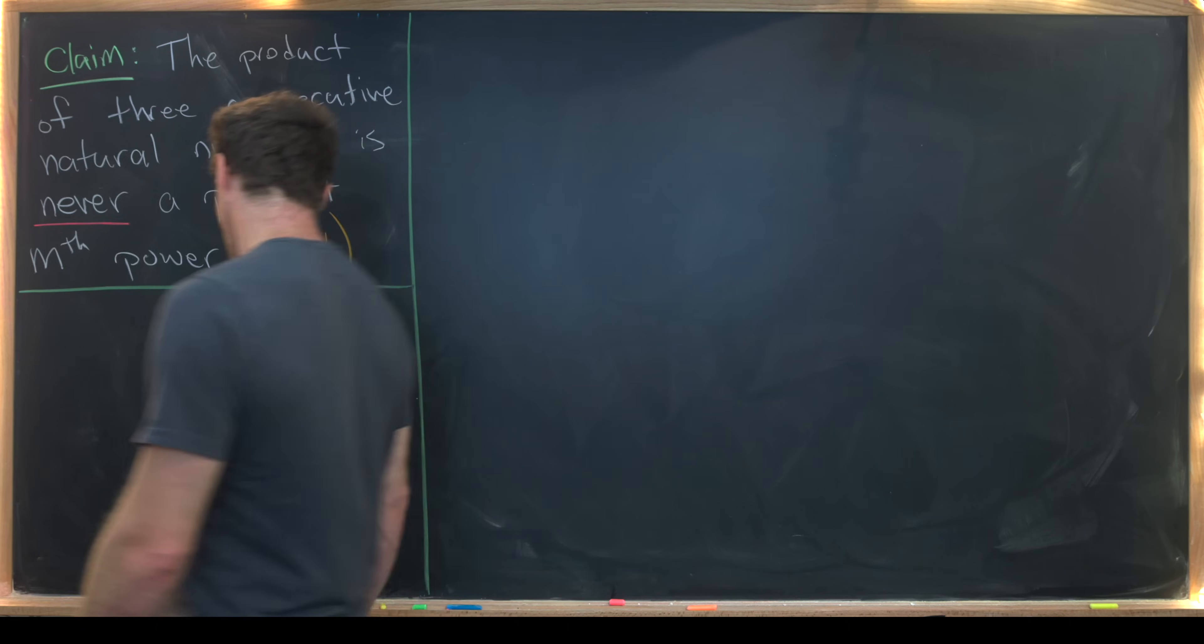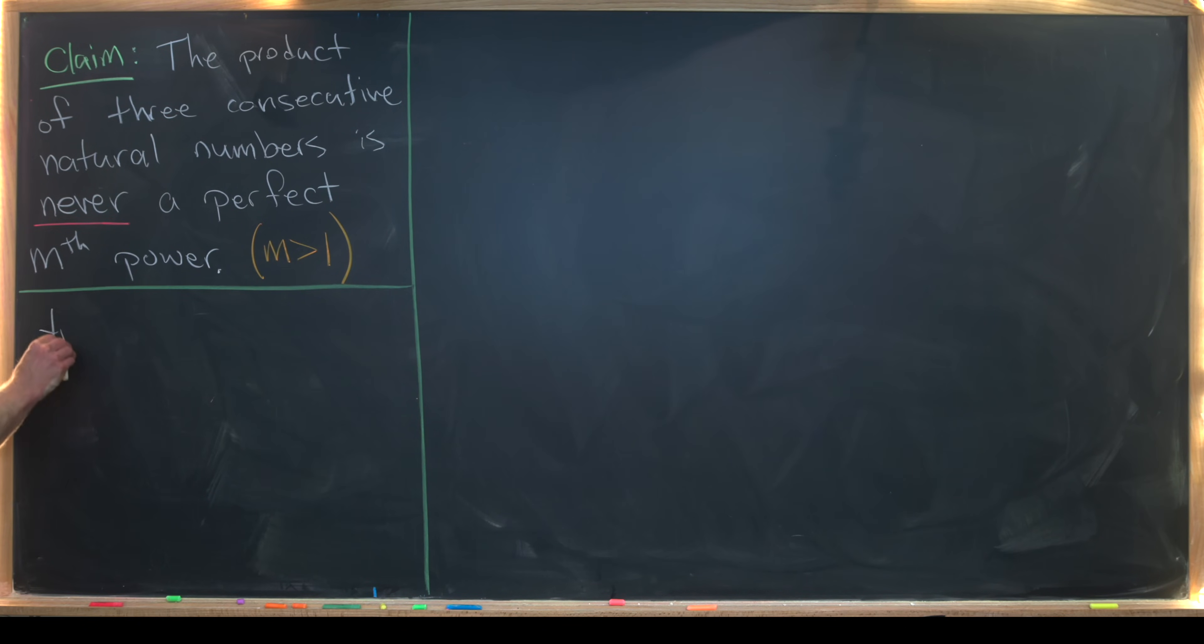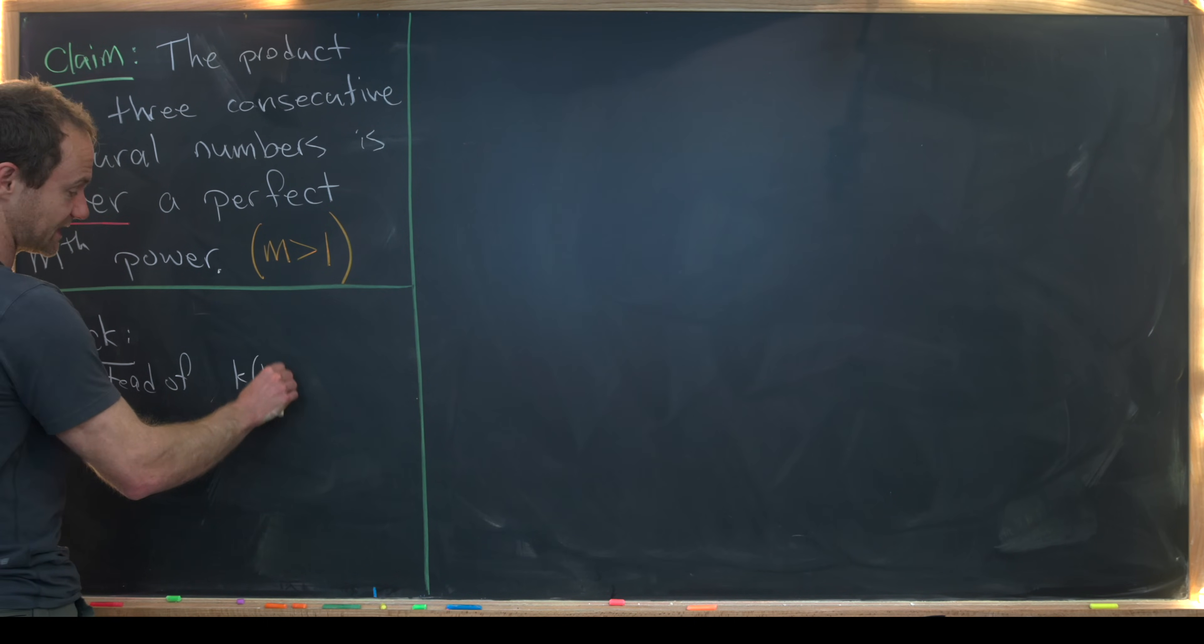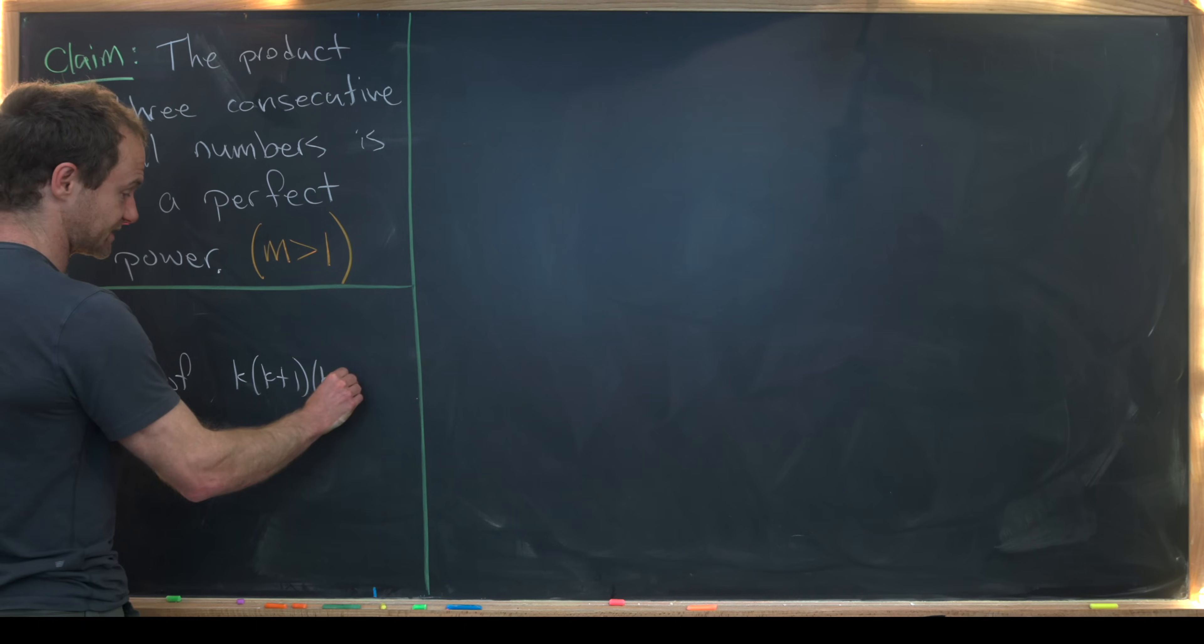And now, maybe before we get started, I want to point out what trick we will use. And that trick is to algebraically symmetrize this whole setup. So instead of writing something like k times k plus 1 times k plus 2,